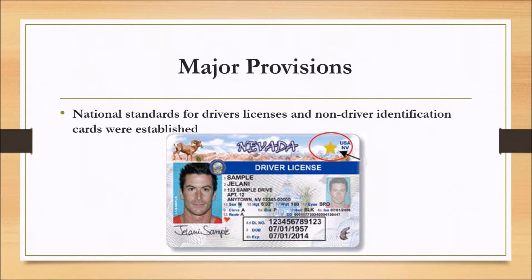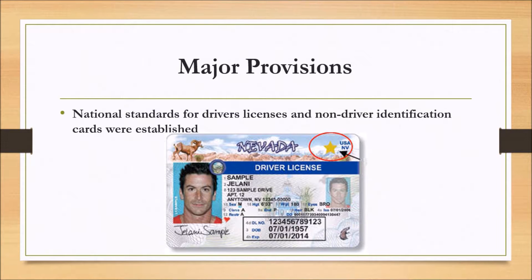To meet the requirements for the minimum documentation, a state is to include full legal name, date of birth, gender, their driver's license or ID number, a digital photograph, address of principal residences, signature, and physical security features to prevent tampering along with features on each driver's license and ID card issued to a person. To meet the minimum issuance standards, a state should require presentation and verification of certain personal information before issuing a driver's license or ID card.